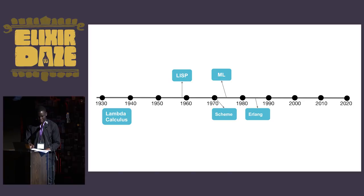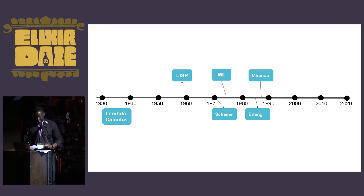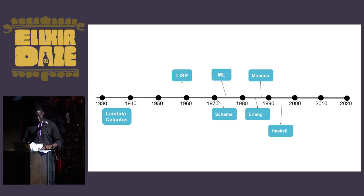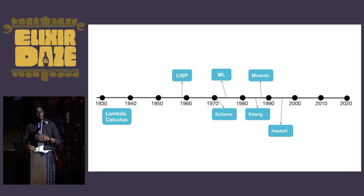Miranda is a descendant of ML and emerges in 1988, popularizing laziness within the functional programming community. Haskell then closes out the century in 1997. It borrows heavily from Miranda, especially the ideas of lazy evaluation that Miranda introduces. However, it also introduces static typing, which we can see as a constant move to modify the existing lineage.